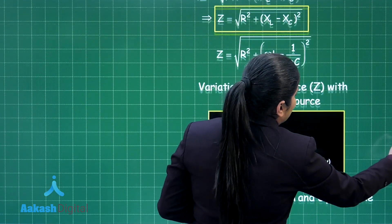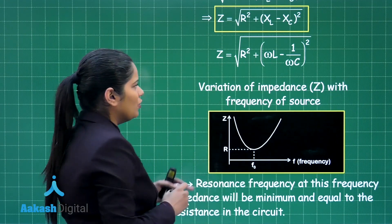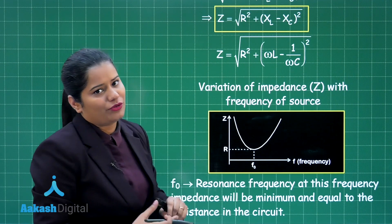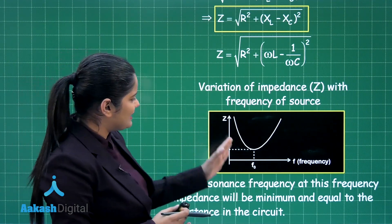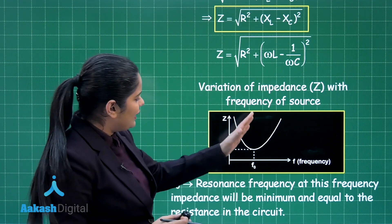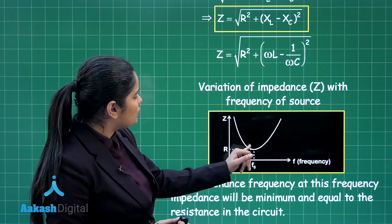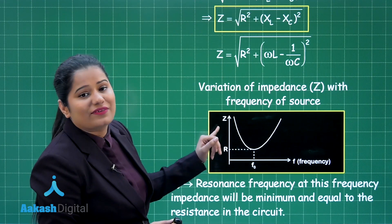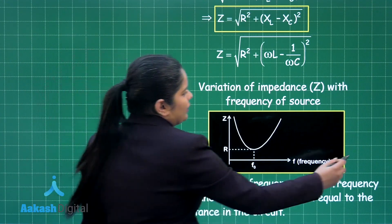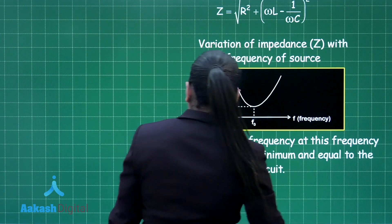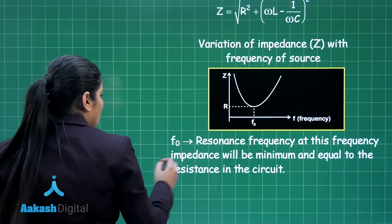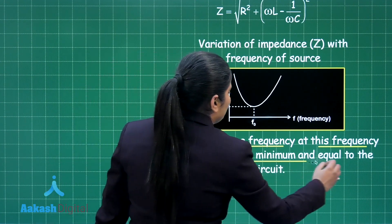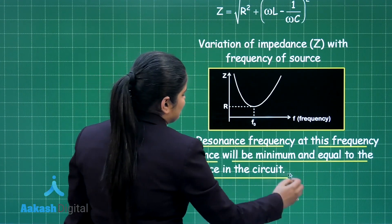We can plot the variation of impedance with the applied frequency of the AC source. At frequency F₀, the impedance is at its minimum and equals the resistance of the circuit. This F₀ is called the resonance frequency, and at this frequency the impedance will be minimum and equal to the resistance in the circuit.